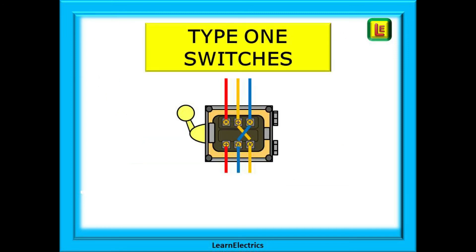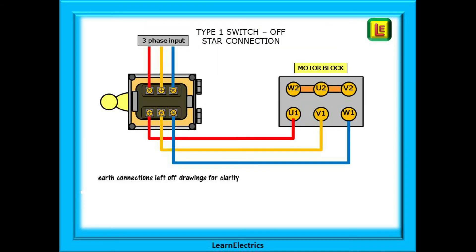We can begin with type 1 switches. This is a type 1 switch in the off position. The motor is connected in a star configuration, and as you can see in the off position there is no path for current to flow from the input side to the motor.